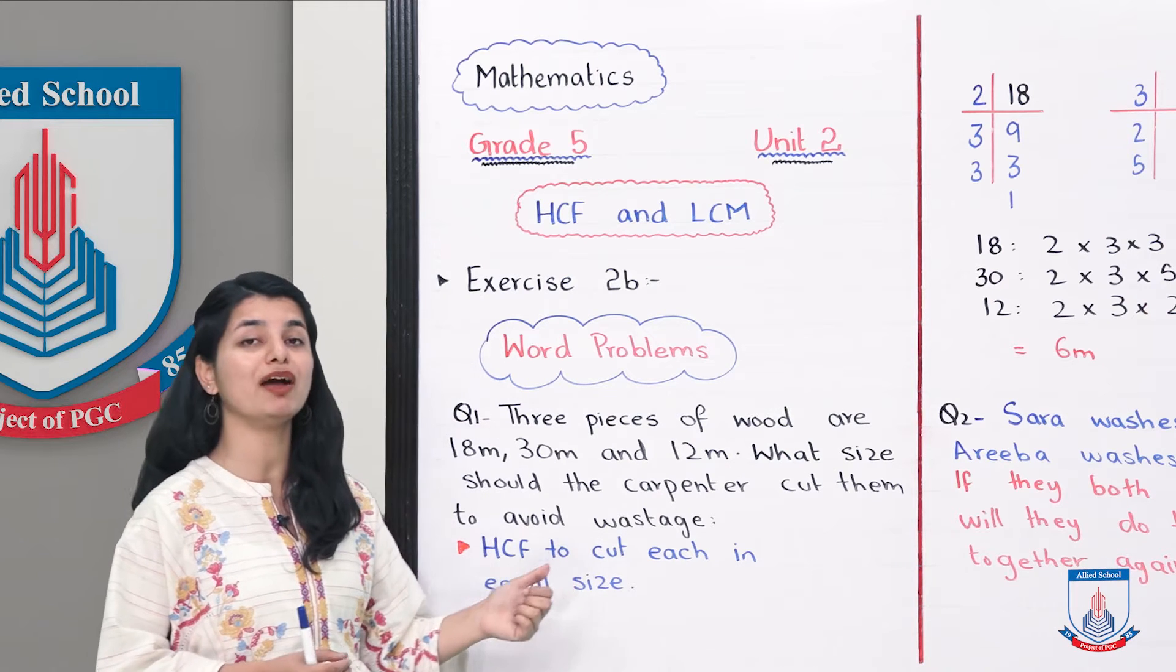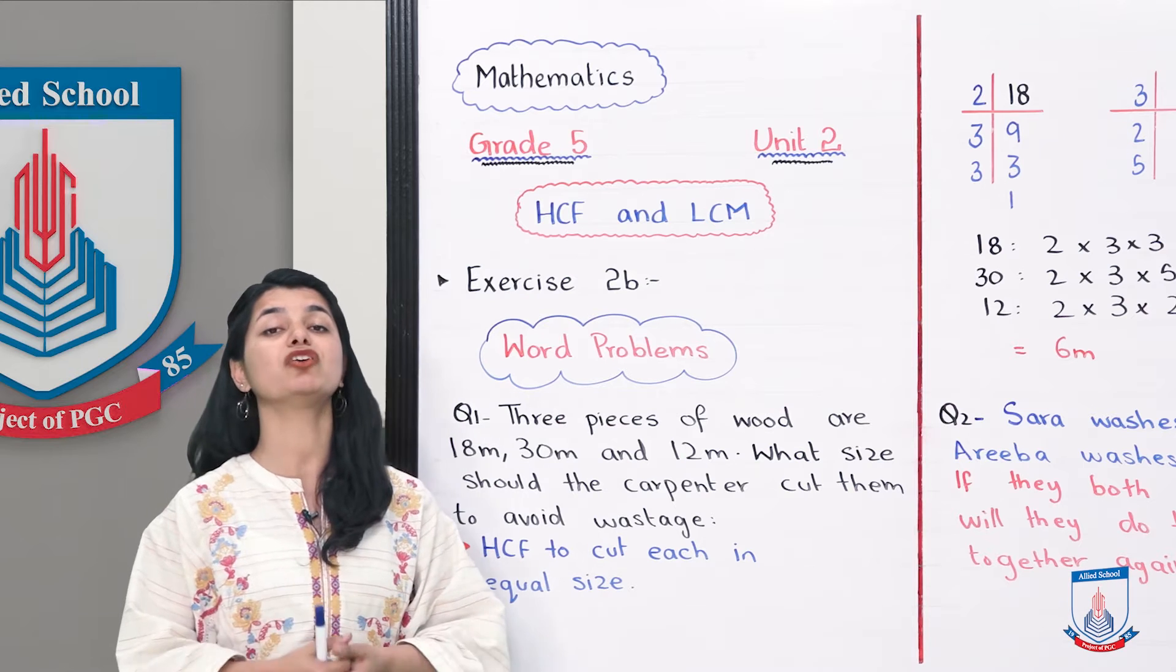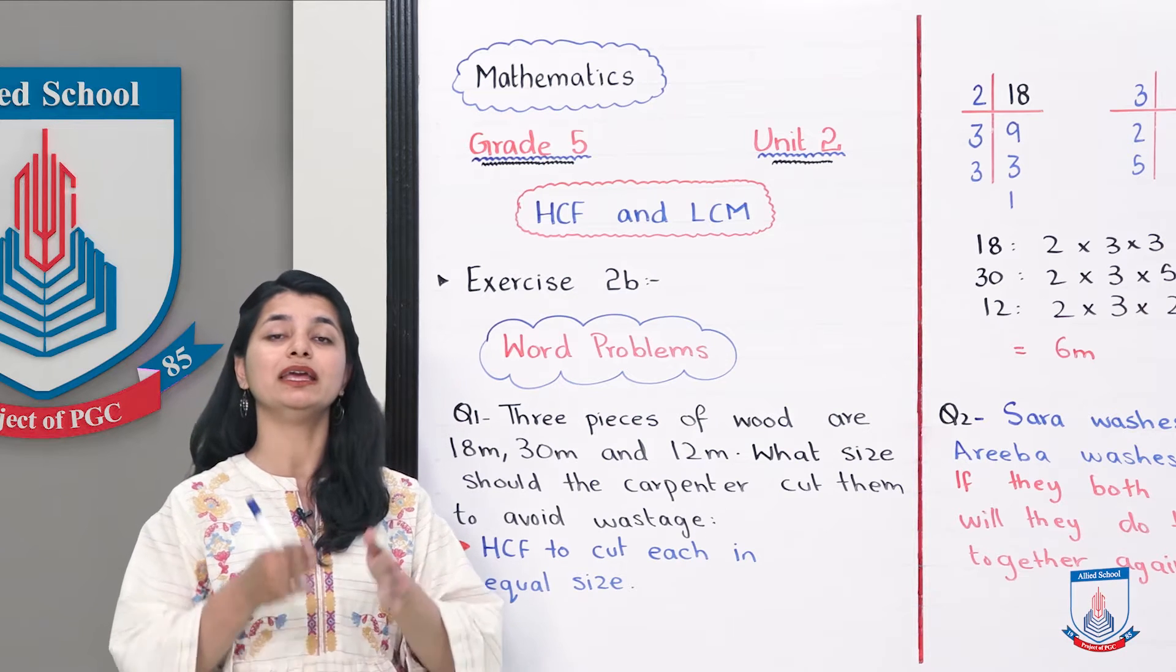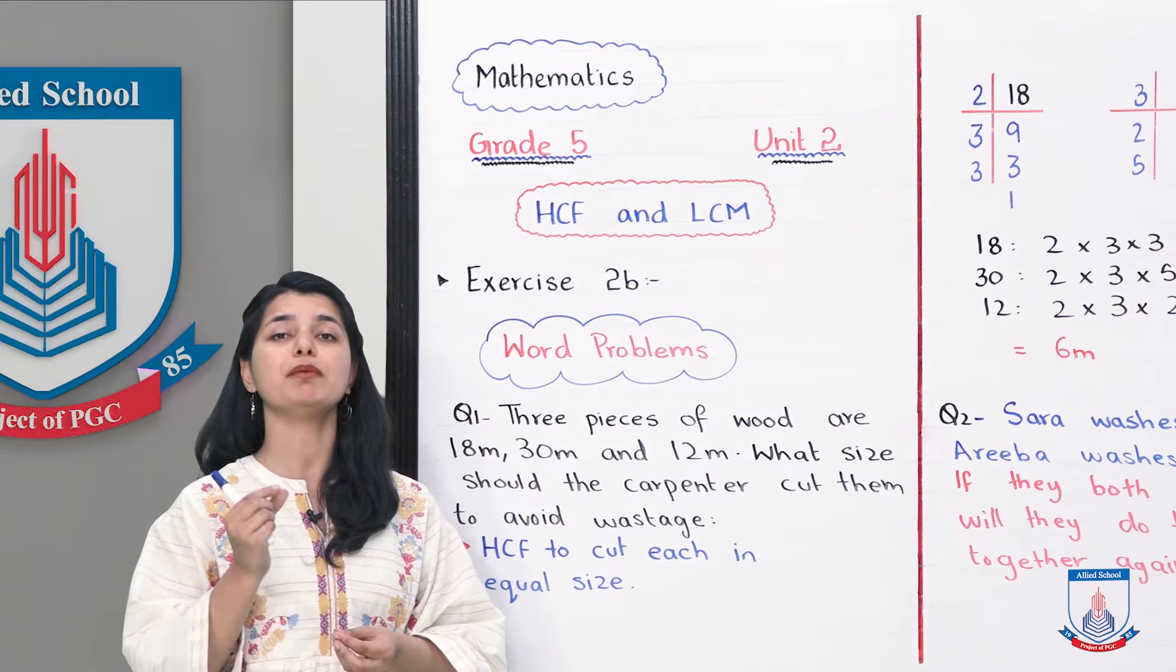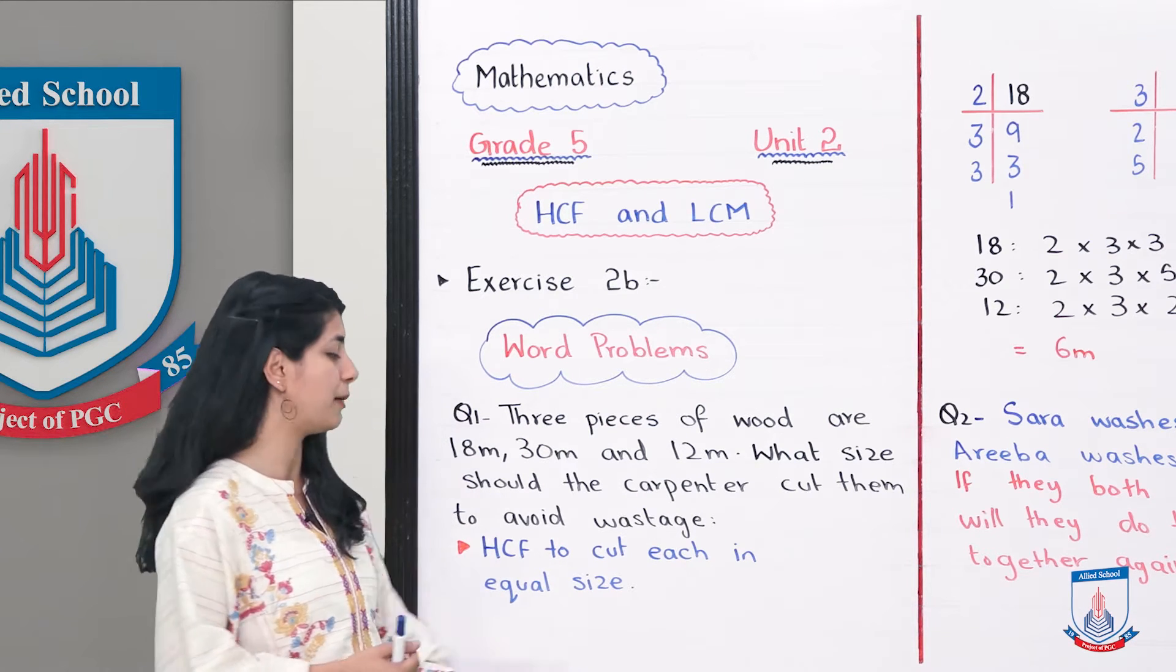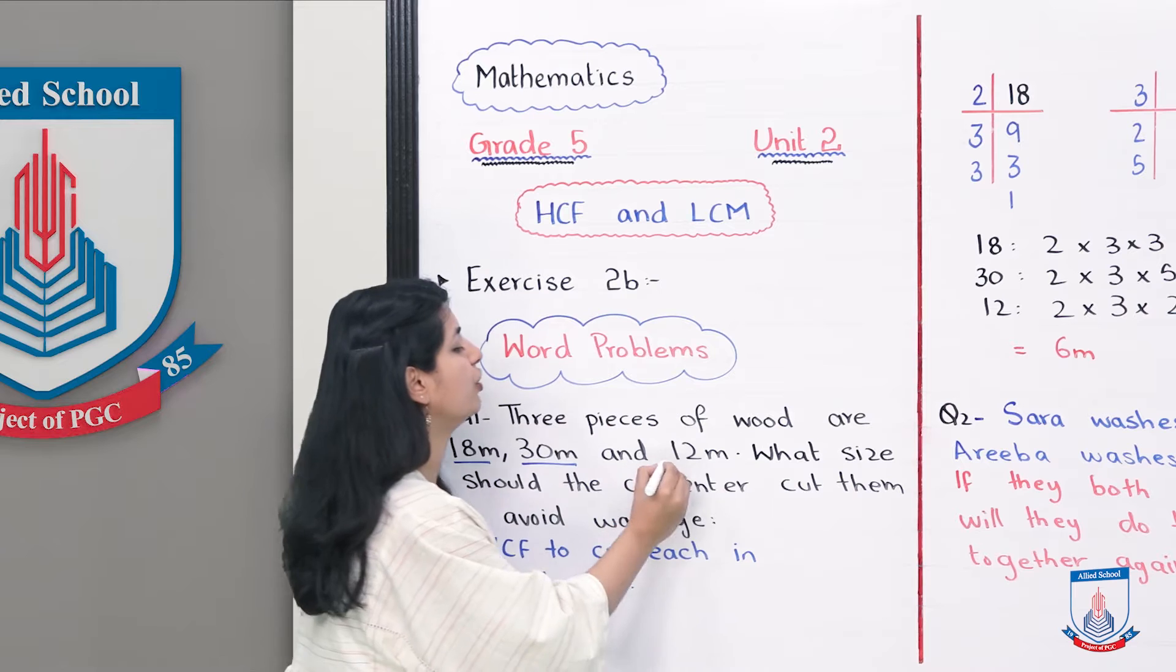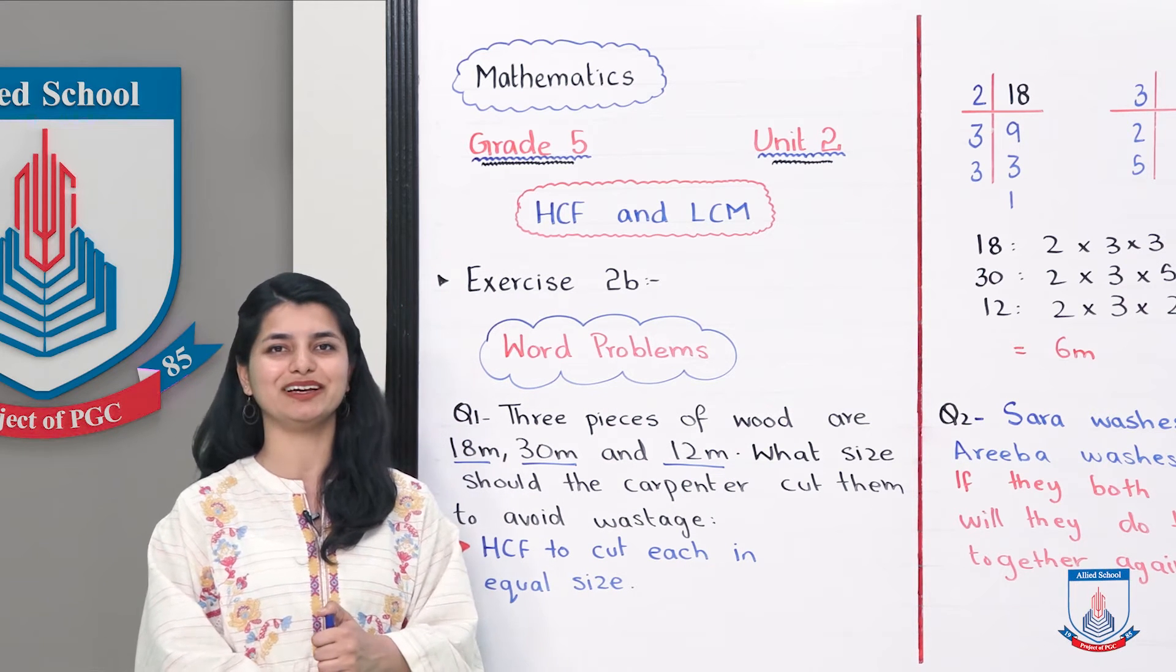The method is that when you have to divide three different things and they need to be equal, you will find the highest common factor. When you get the highest common factor, you will know which number can divide all three with minimal wastage. For that reason, we have to calculate HCF. We have three values: 18, 30, and 12. Let's see how we will calculate HCF.